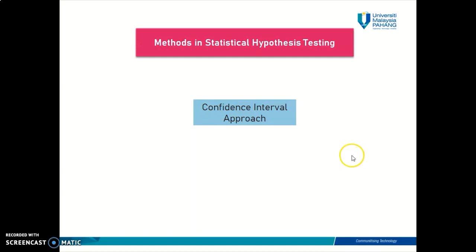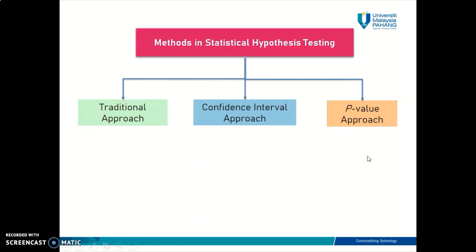This is another method or another option that you can choose from to conduct a statistical hypothesis testing. In actual fact, there are three different approaches that you can use. The first one is the traditional approach, which you have learned in our previous videos. The second one is the confidence interval approach, which you will learn in this video. And finally, the p-value approach, which you will learn in my next video.